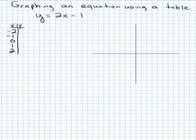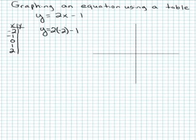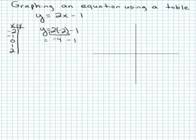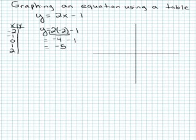You're going to put the chosen x value into your equation. I'm going to follow order of operations, which says to multiply before you subtract. So 2 times negative 2 is negative 4, and negative 4 minus 1 is negative 5. So when x is negative 2, y is negative 5.